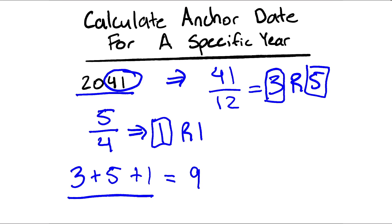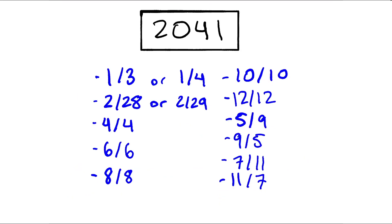So now what we're going to do is we're going to take our anchor date for the century and add 9 to it to figure out the anchor date for the year. So we had Tuesday as the anchor date of the century, and if we add 9 days, that will be a Thursday. So that tells us that the anchor date for 2041 is a Thursday. All of these days in 2041 are Thursdays.